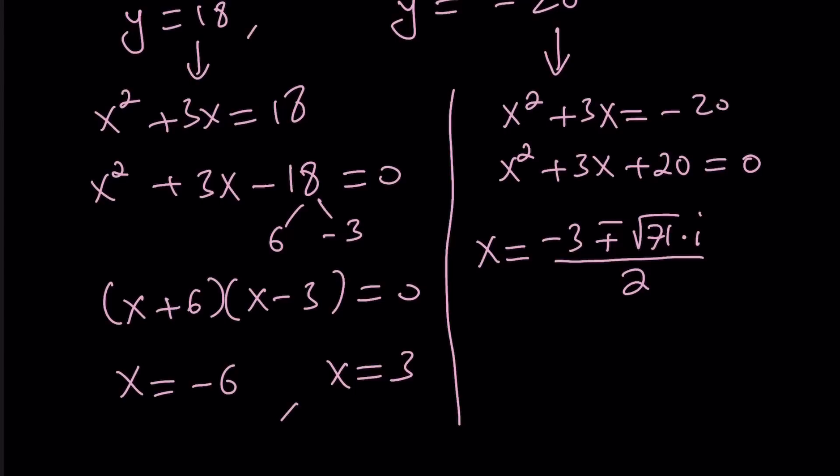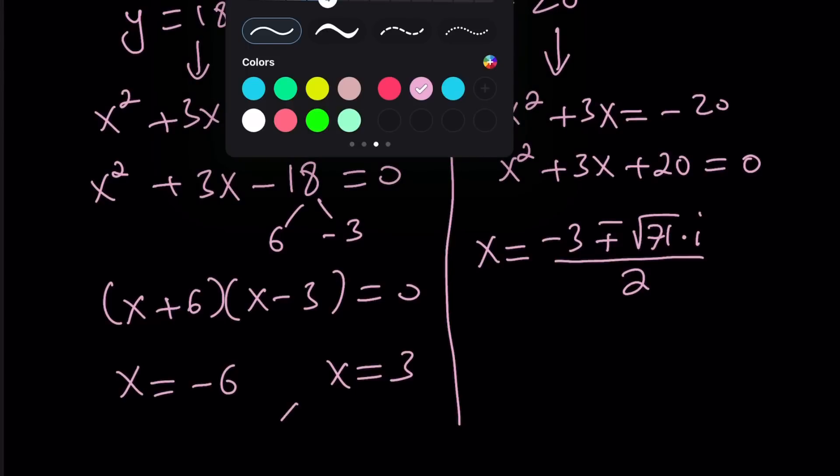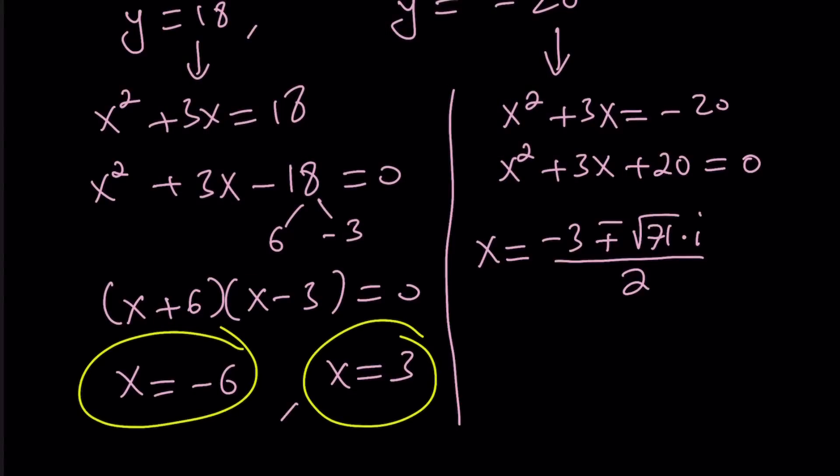So we got four solutions. It's a quartic, makes sense. There should be a maximum of four solutions because sometimes roots can repeat. So that's kind of one way to look at it. Let me show you the second method.